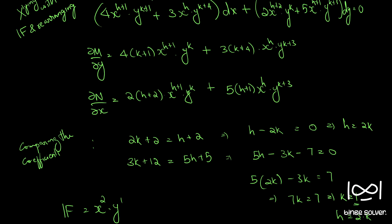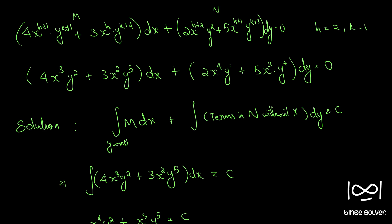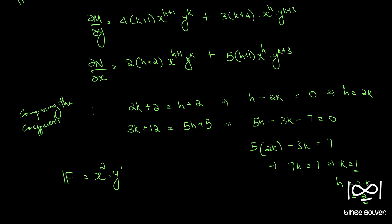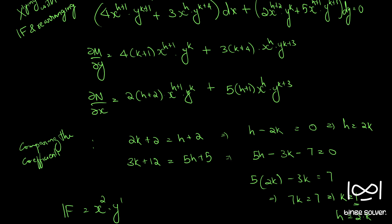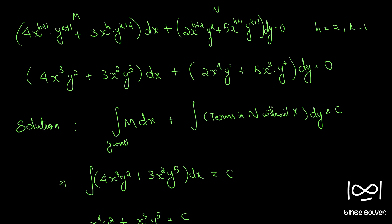So this is the solution. The textbook gives the answer as x⁴y³ + x³y⁵, where the power of y in the first term is given as y cubed. I believe that is a printing mistake, and x⁴y² + x³y⁵ = C is the correct answer. If you find any mistake in my steps, please point it out and I will correct it. These are the steps using Rule 6 to find the integrating factor and solve Question 231.